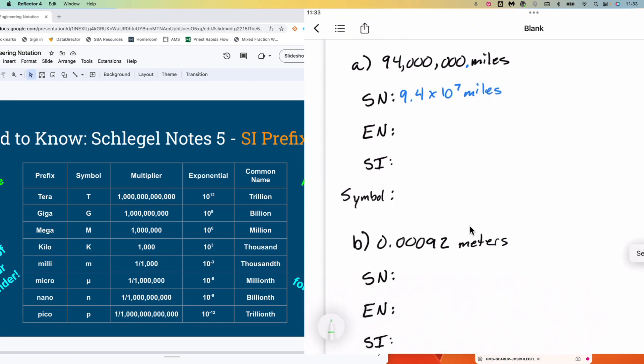This would be 9.4 times 10 to the seventh miles. And engineering notation is going to be very similar, except for that with engineering notation, we can only move in jumps of three. You'll notice over here in our table that we have 10 to the third, 10 to the sixth, 10 to the ninth, 10 to the twelfth. 10 to the seventh is not there, because seven is not a multiple of three. Every time we move our decimal place, it's going to move three places. Very similar to scientific notation, we're going to start there. We move three to the left. That's one set of three. We move another three to the left. That's another set of three. That makes six total. And there aren't three more numbers to the left of my current decimal placement, so I stop. We're going to end up with 94 times 10 to the sixth miles. You can see 10 to the sixth right here matches with million. That's a comfortable thing for us.